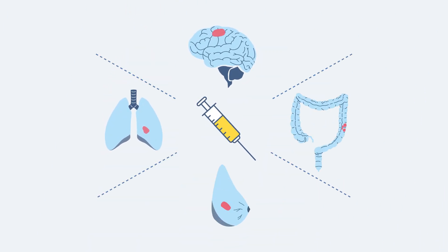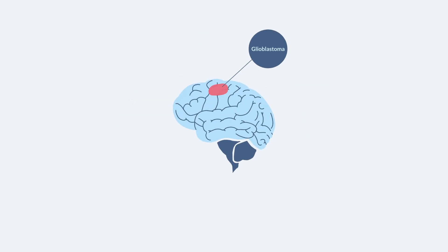Although UPAR theranostics can be used in most tumors, we will start with glioblastoma, an aggressive brain tumor, as a first indication.